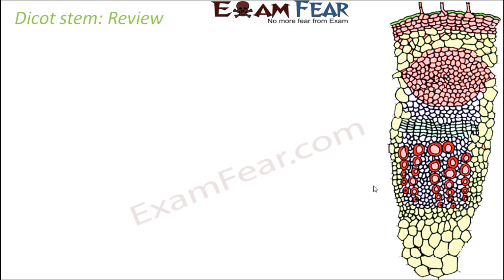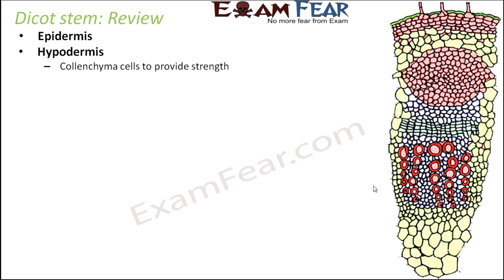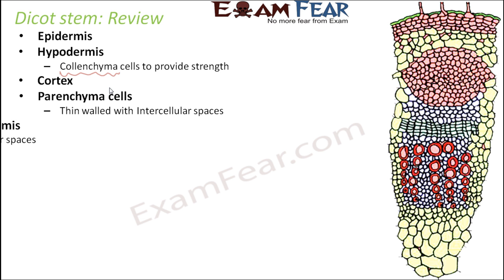Let us have a quick review. It has epidermis followed by hypodermis, which is made up of colenchyma cells to provide strength. In case of monocot stem, the hypodermis was made up of sclerenchyma, but here it is made up of colenchyma, so the dicot stem will have some flexibility as well. Cortex is nothing but parenchyma cells plus endodermis — parenchyma cells plus endodermis together form the cortex.